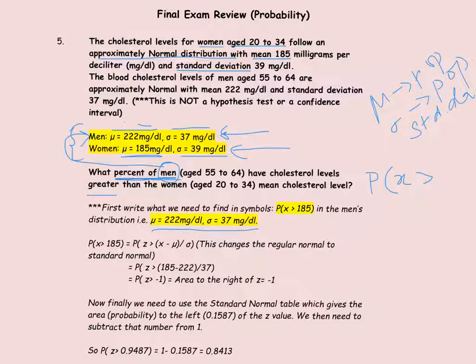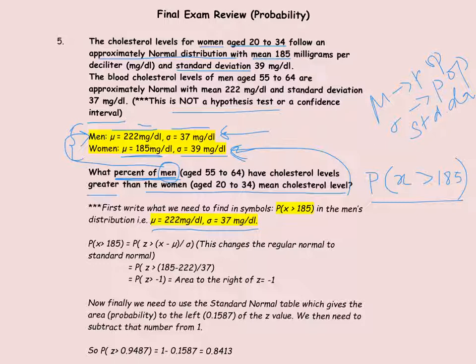We need the probability that x is greater than the women's mean cholesterol level, which is 185 milligrams per deciliter. Note that this is not a hypothesis test and it is not a confidence interval. On the final exam, a lot of students assume this is a hypothesis test or requires a confidence interval. But the minute you read the question saying 'what percent of' or 'what is the probability of,' you know you're calculating probabilities. So what is the probability that x is greater than 185?